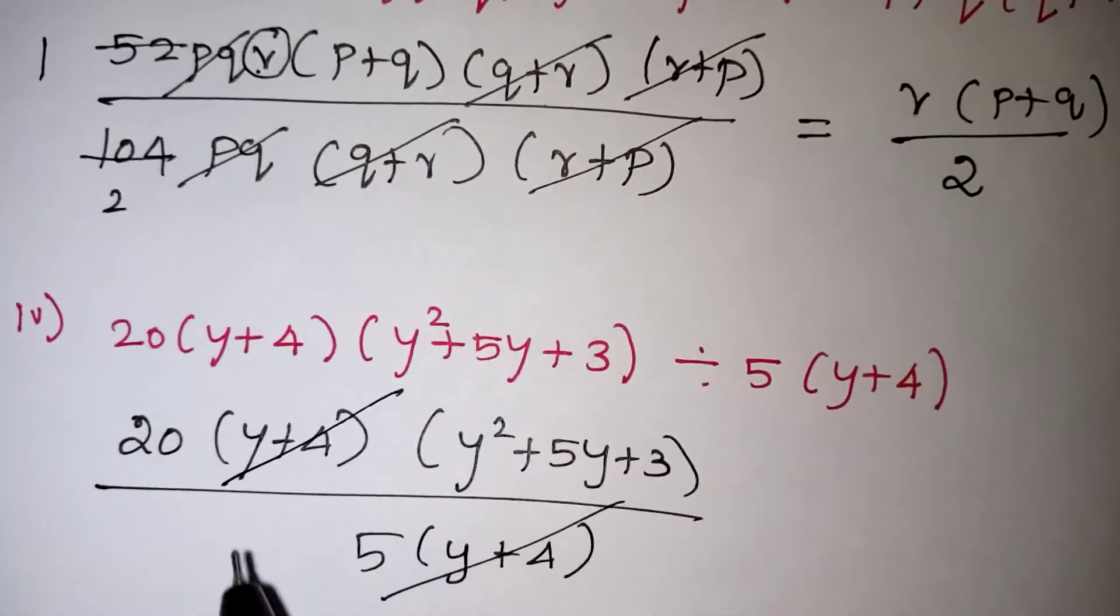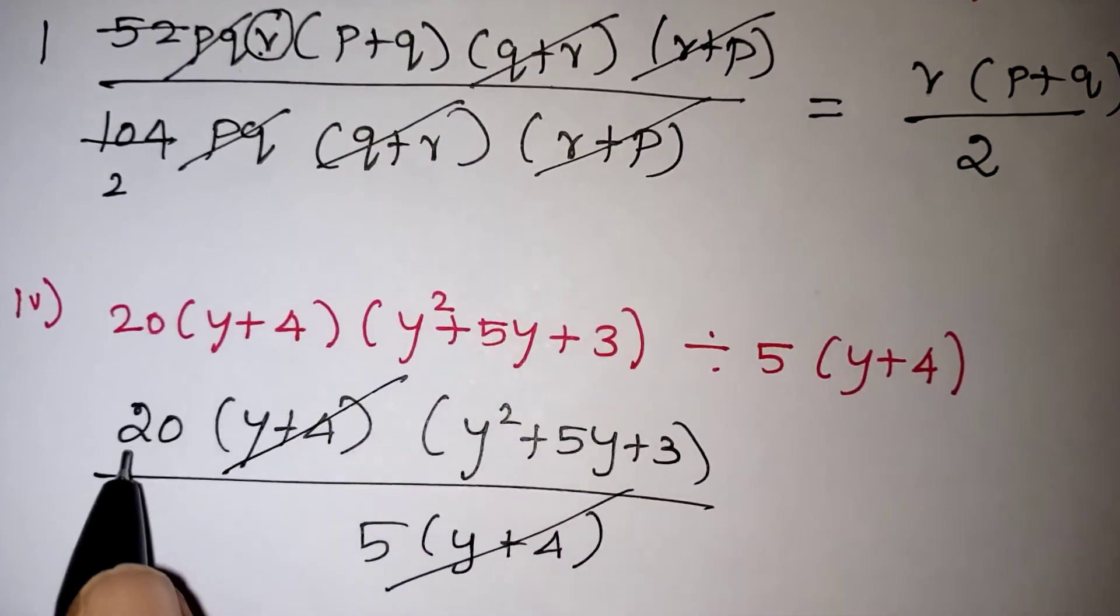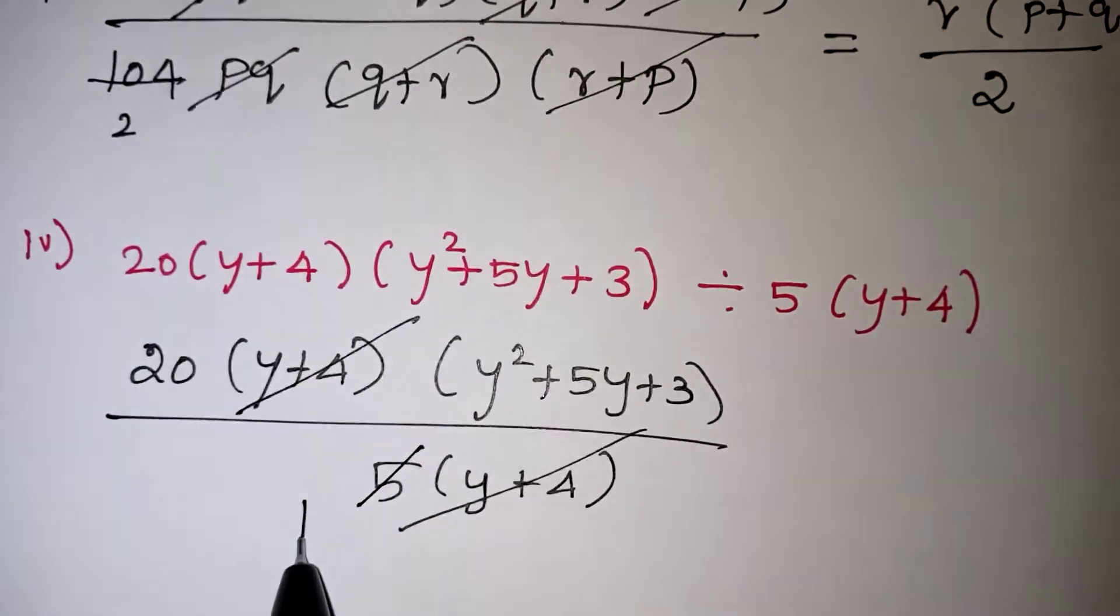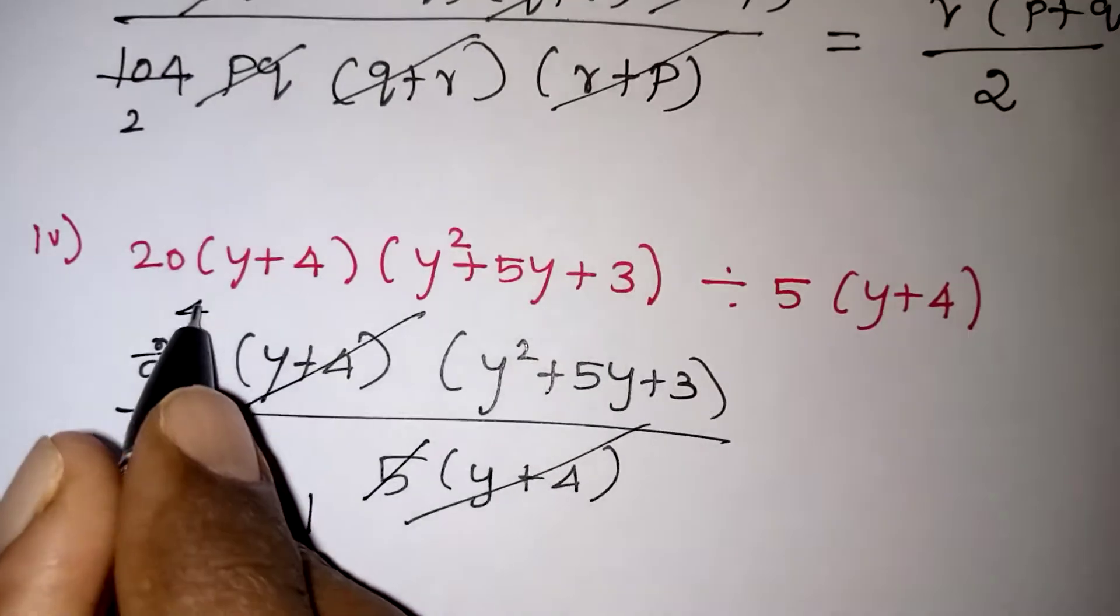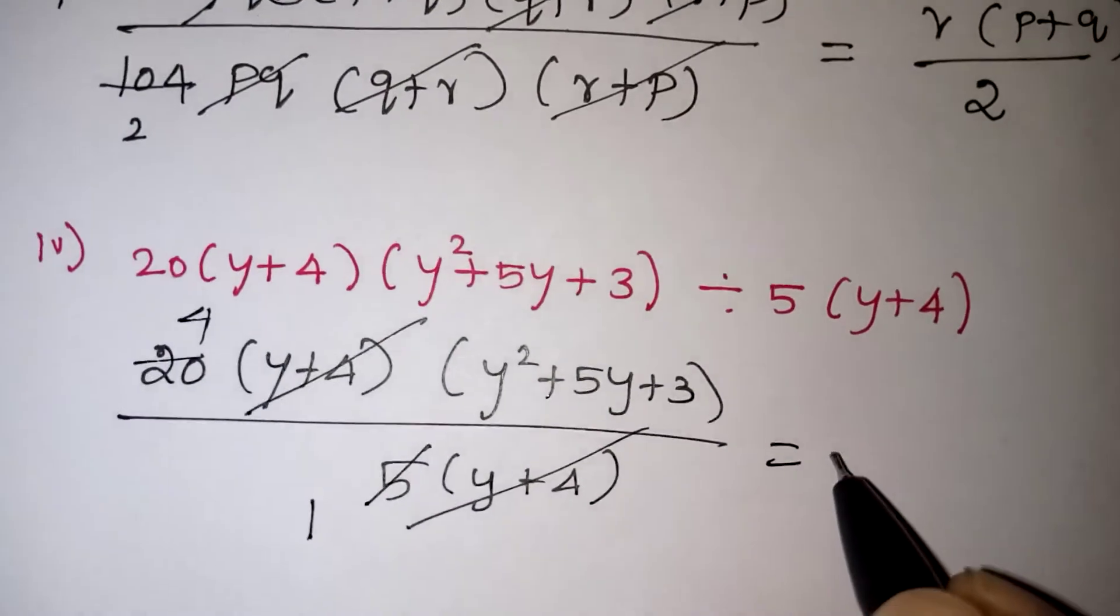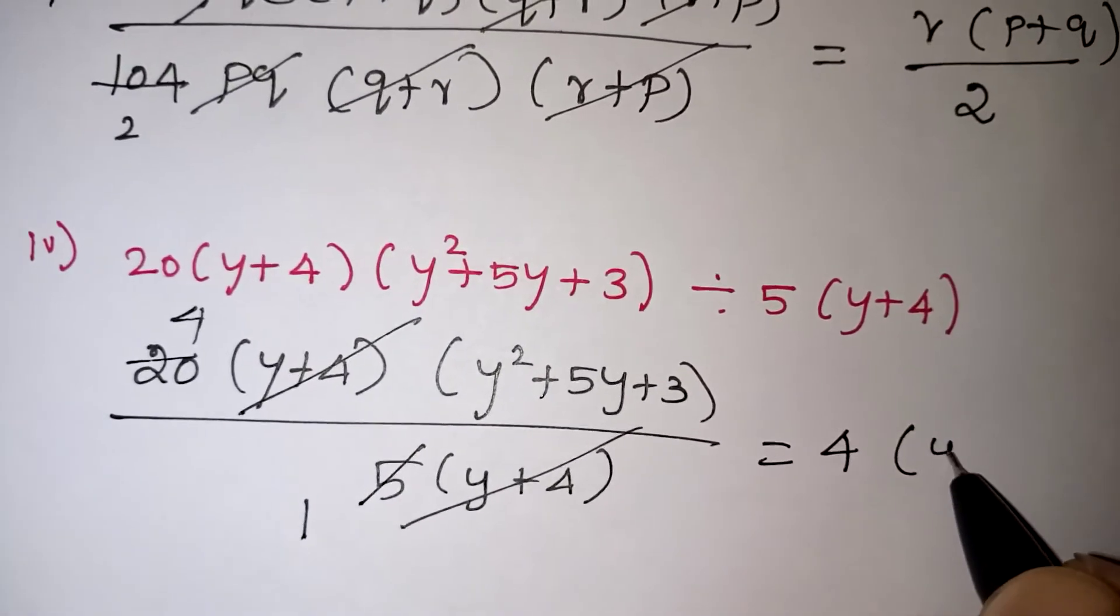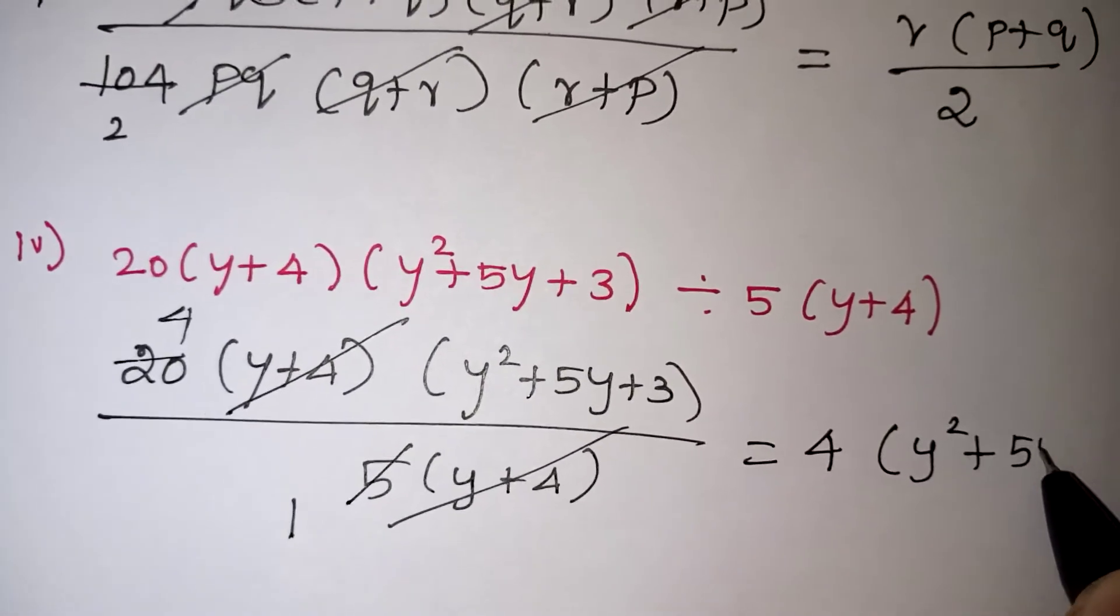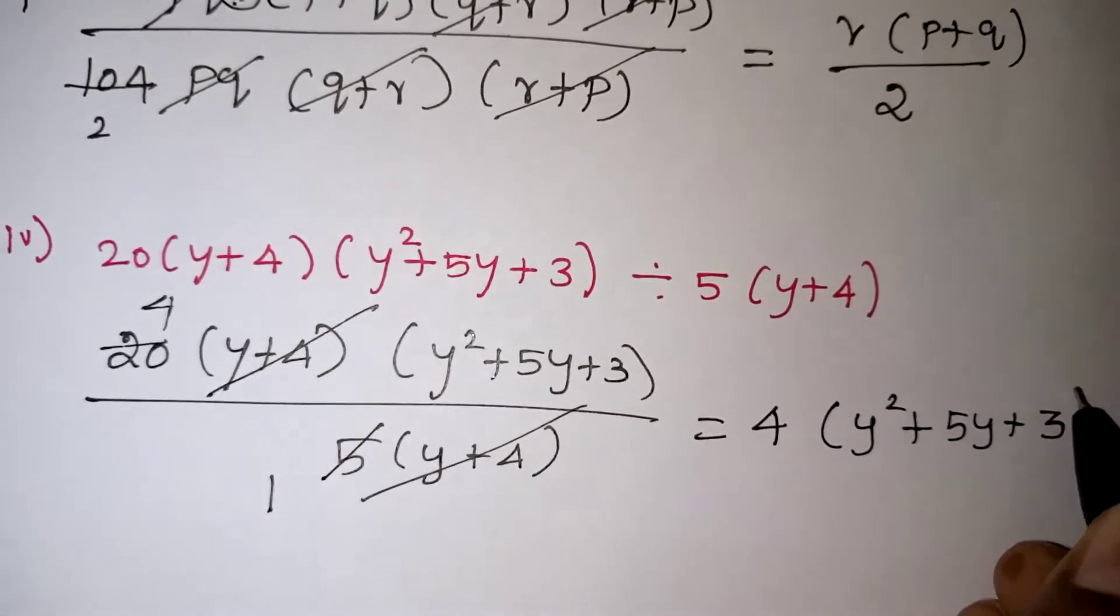(y + 4) and (y + 4) will get cancelled. 5 and 20 have a common table, 5 ones are 5, 5 fours are 20, so the remaining terms are 4(y² + 5y + 3) is your final answer.